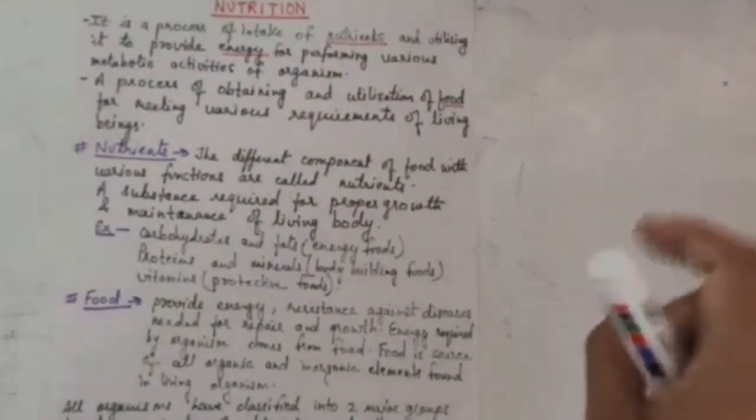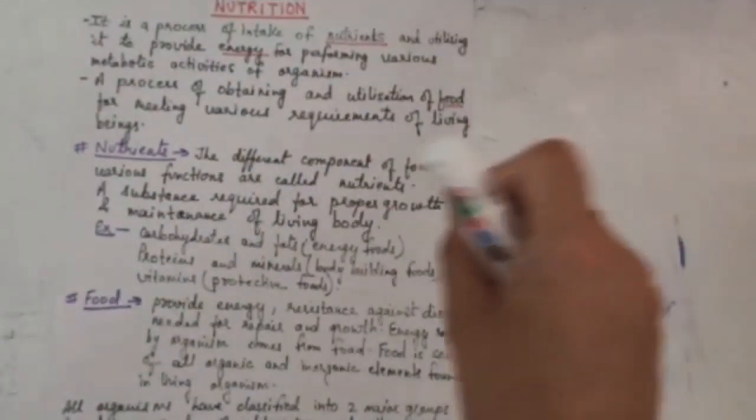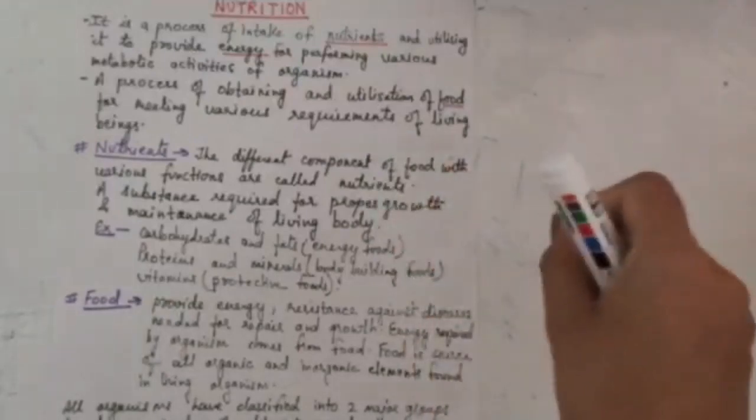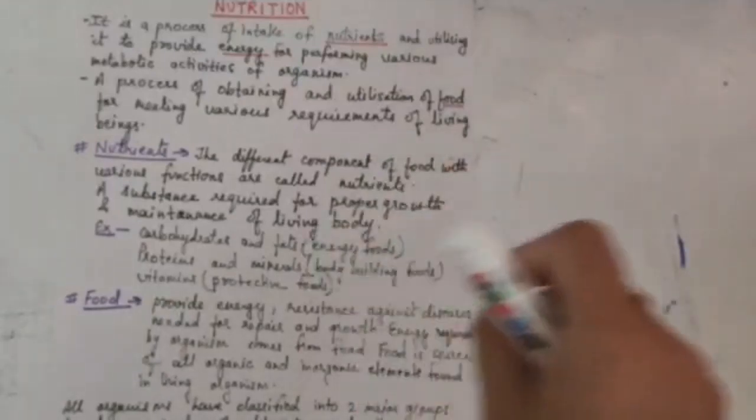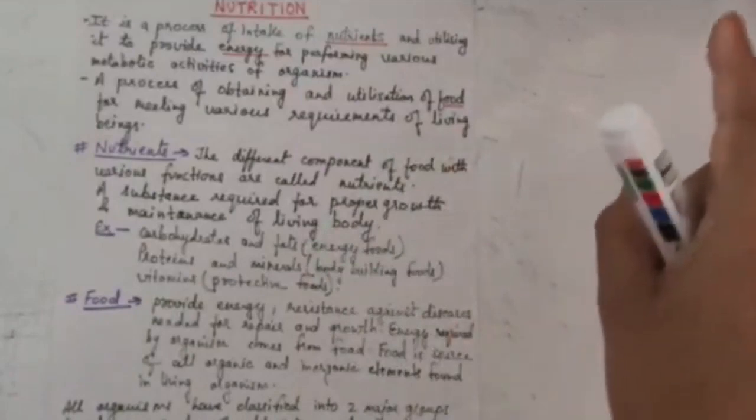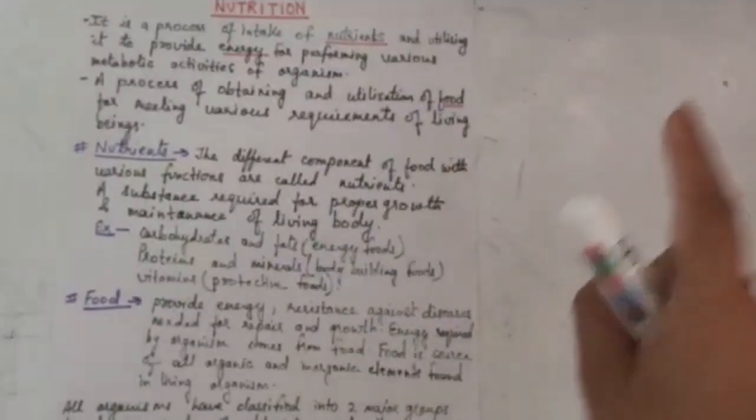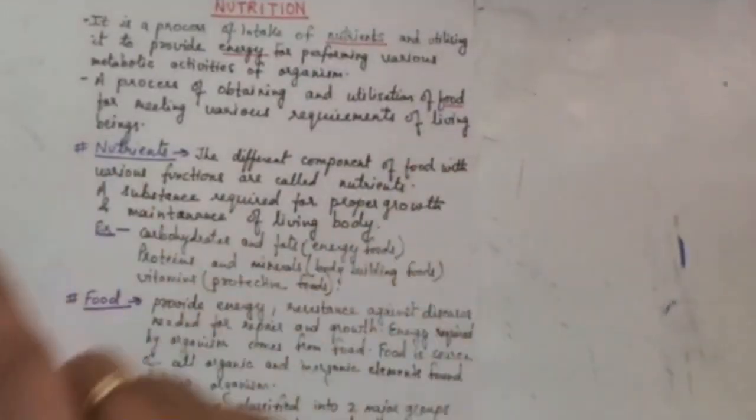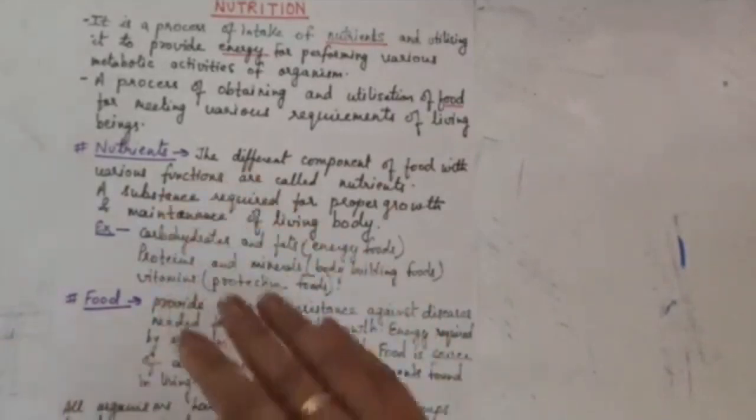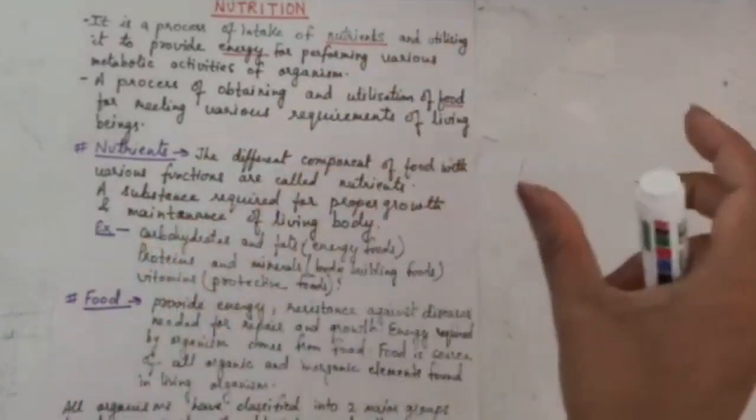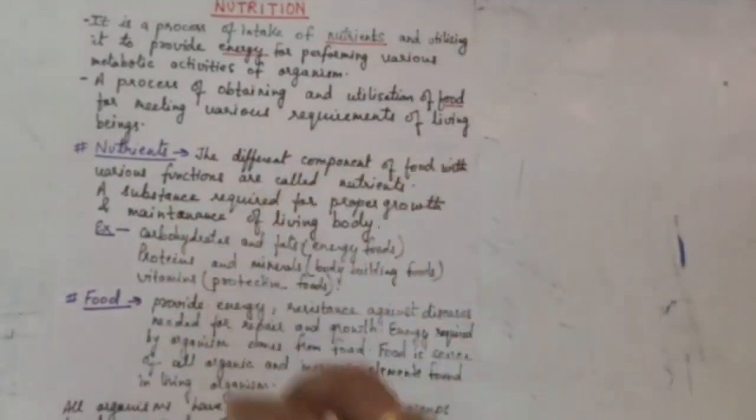Hence, it is a very important question that why diffusion is insufficient to meet the oxygen requirement. Therefore, in multicellular organisms, they have a specialized transport system which takes oxygen to the surroundings of the individual cells within a span of some minutes.